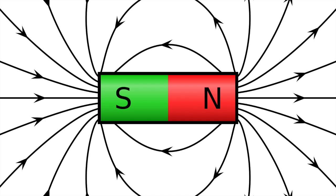You'll notice that near the poles of the magnet the field lines are closer together, so the field should be stronger, and when you get far away the field lines spread out, so the field should be weaker. This is the behavior we are expecting.